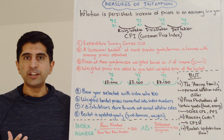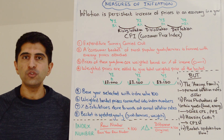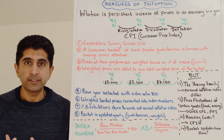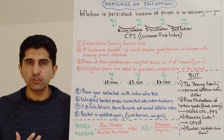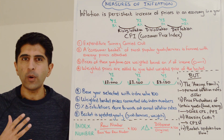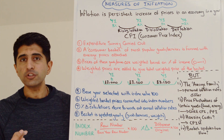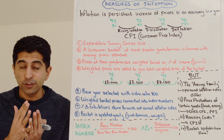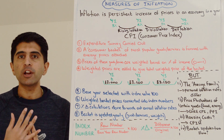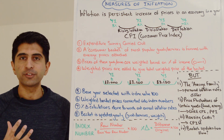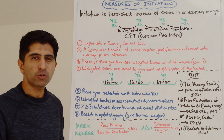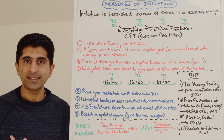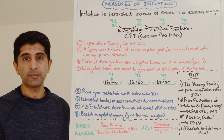Countries around the world measure inflation by constructing a consumer price index, and from that index they calculate annual rates of inflation. This CPI — the consumer price index — is a very useful way of measuring inflation because the rates we get tell us about rises in prices of goods and services that consumers are buying. That means the inflation rate is applicable to households. Let's understand how we carry out a consumer price index and get annual rates of inflation from it.